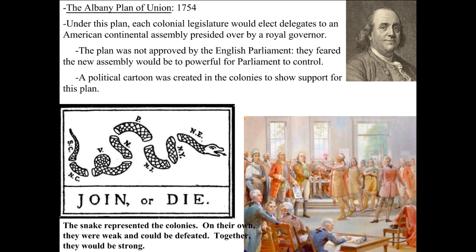The Join-or-Die picture reflected that many colonists were afraid that individually, separated into pieces, they would be swallowed up by the French and the Indians. But together they would be very strong, like a snake. That symbol comes up again and again in American history, and we're going to see it in the next couple of slides.